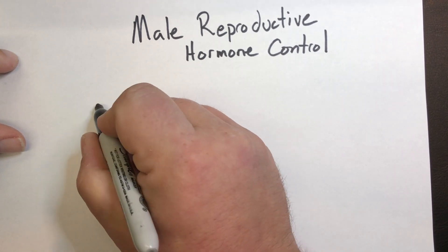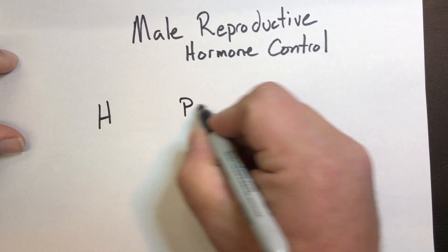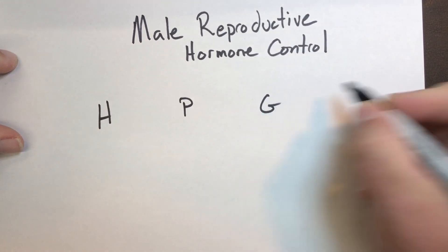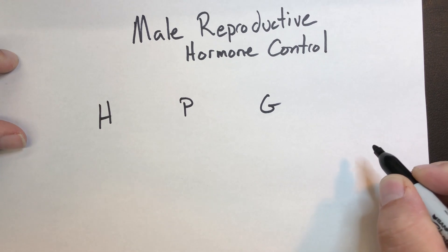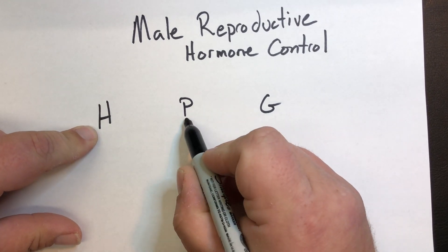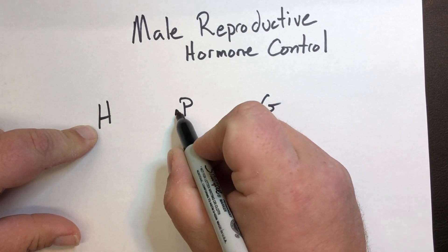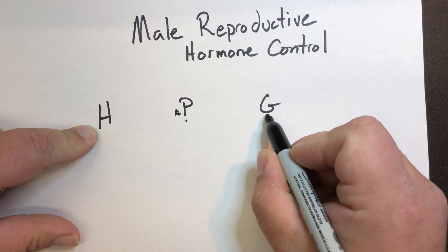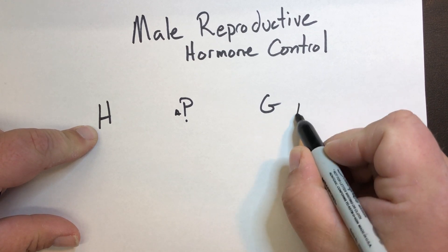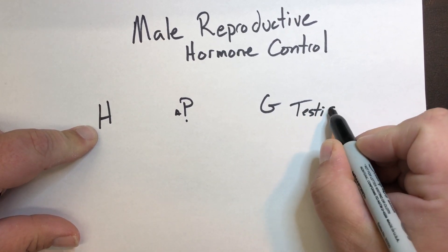Quick review. Remember, we're talking about the HPG axis — hypothalamus, anterior pituitary, and the gonad. In the male, we're talking about the testis.